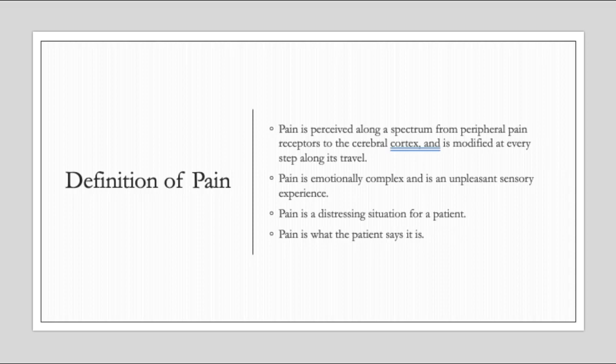So what is pain? I'm sure all of you have experienced pain and you've seen loved ones and patients in pain. All of us handle and deal with stress and pain differently. Pain is perceived along a spectrum, meaning it can range from peripheral pain receptors to the cerebral cortex and is modified at every step along its travel. We know that pain is complex — not everyone experiences it the same way. It's very emotionally linked, meaning people will associate different types of emotions with pain. In general, it's an unpleasant sensory experience.